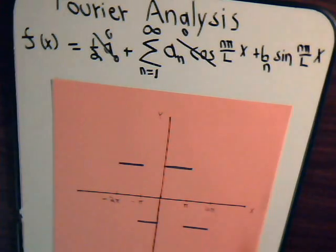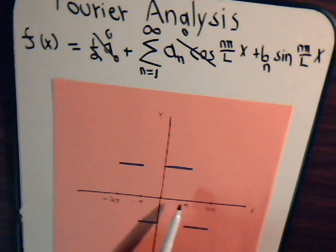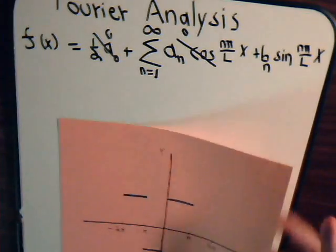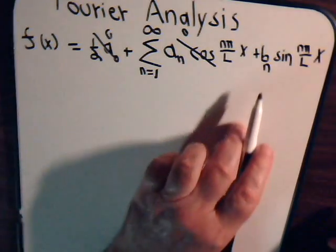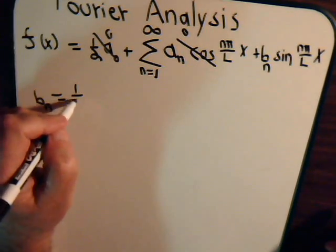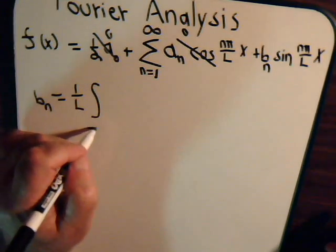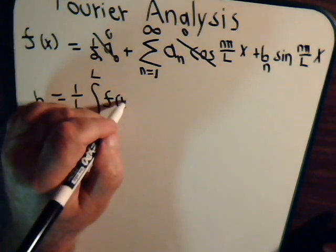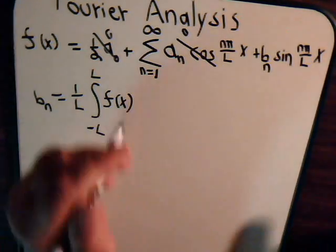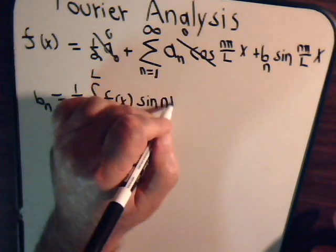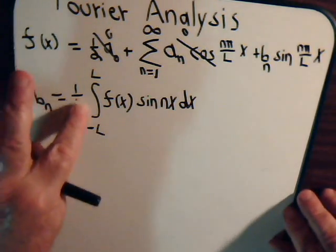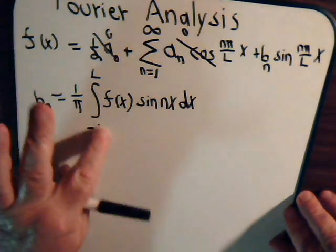So what we're going to have then is that we want to determine what b sub n is. b sub n equals 1 over l, the integral from minus l to plus l of f of x. And in this case, it's just the sine of nx, because l is equal to π. So we just have the sine of nx dx. And this is π, so we have 1 over π, going from minus π to plus π.